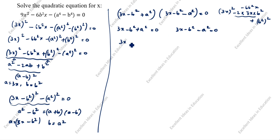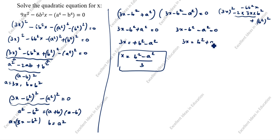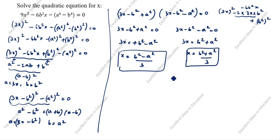From the first factor: 3x = b² minus a², so x = (b² minus a²)/3. This is the first answer. From the second factor: 3x = b² plus a², so x = (b² plus a²)/3. This is the second answer. This completes the first method. We will now see the second method.